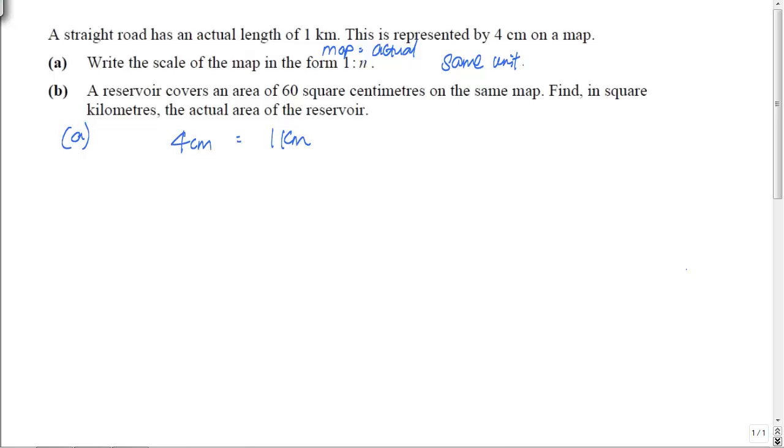So right now, we're going to convert both to the same units. And in this case, we're going to convert everything to cm, which is the smaller unit of the two. So you don't have to do anything with 4 cm, but we need to convert 1 km into cm. How do we go about doing it?